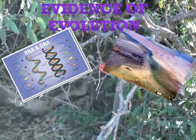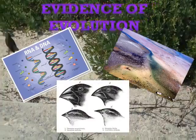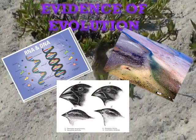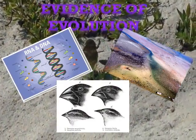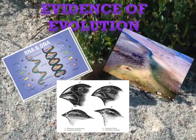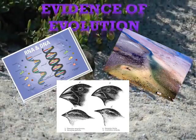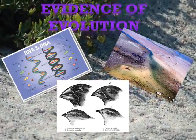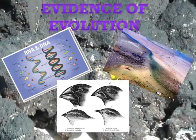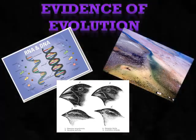Darwin noted that several finch species have beaks of very different size and shape. Each species uses its beak like a specialized tool to pick up and handle its food. Darwin proposed that natural selection had shaped the beaks of different bird populations as they became adapted to eat different foods. That was a reasonable hypothesis, but was there any way to test it?